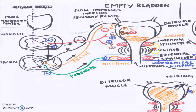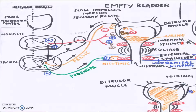For the female, the urethra is quite short. Also, the female urinary tract does not have the internal sphincter. This is the key difference between the male and female urinary systems.